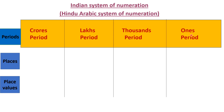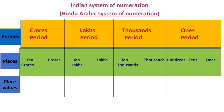The first is ones period, then comes thousands period, then lakhs period, and then crores period. When we have only a three digit number we will use only ones period. Ones period has three places: ones, tens, hundreds. Thousands period has two places: thousands and ten-thousands.